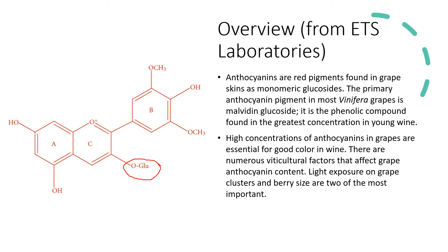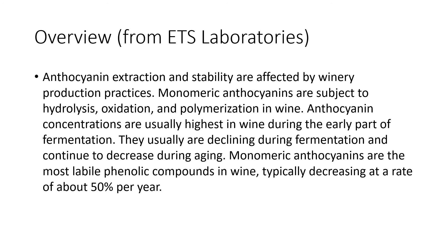Viticulture is really important for the concentration of all these phenolic compounds. Anthocyanin specifically is light-incidence related — we want some light exposure on our grapes. Having leaf removal in the fruit zone at the right time, or selecting clones with a looser cluster architecture, can be helpful for increasing color in finished wines. Anthocyanin extraction and stability are affected by winery production practices. Monomeric anthocyanins are subject to hydrolysis, oxidation, and polymerization — meaning they can be broken down, stuck to something, or bound to tannins.